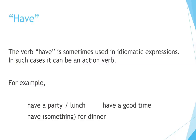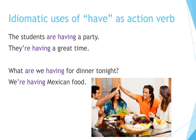The verb have is sometimes used in idiomatic expressions, and in such cases it can be an action verb — for example: have a party, have lunch, have a good time, have something for dinner. Idiomatic uses: 'The students are having a party.' 'They are having a great time.' 'What are we having for dinner tonight?' 'We are having Mexican food.'